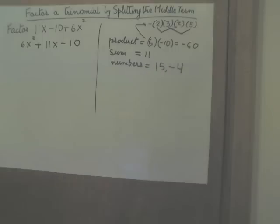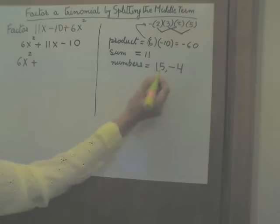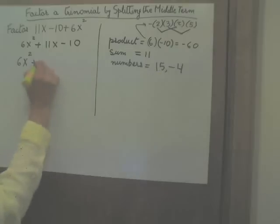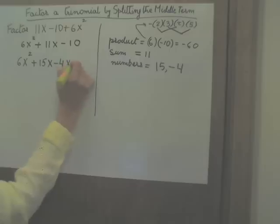We are going to use these two numbers to split up the middle term of my trinomial. So next step, 6x squared plus, instead of 11x, we will write 15x minus 4x minus 10.